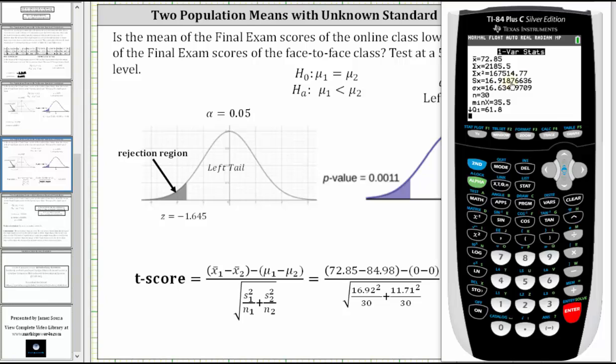We repeat the process for L2. Stat, calc, option one. Now we select list two by pressing second two, go down to calculate, press enter. And again, we have the sample mean and the sample standard deviation.